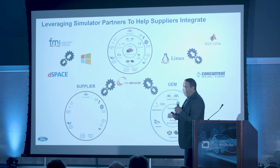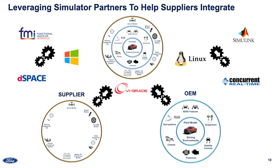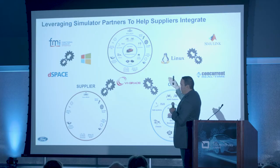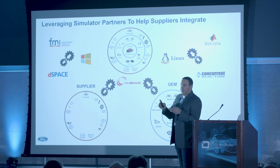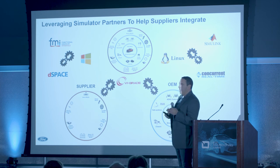One way to get some help is to start leveraging your simulator partners like VI Grade. Let's say your supplier is working in a Windows environment or they're working on a dSPACE rig for HIL — VI Grade can work and try to help, along with your OEM team, on trying to integrate those pieces into your ecosystem. Your setup may not be exactly what VI Grade sells right from the get-go, but at least if you're consistent in what you're doing, then your supplier has the understanding of how to bring that together.